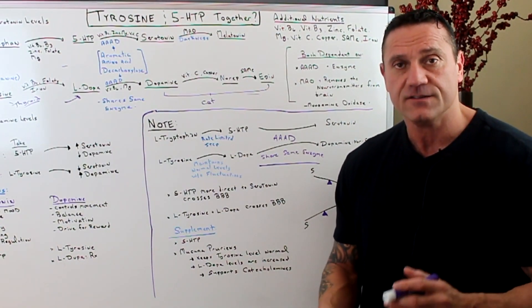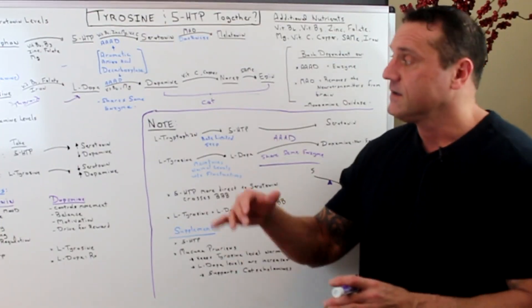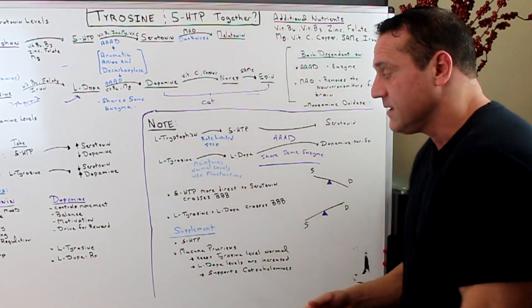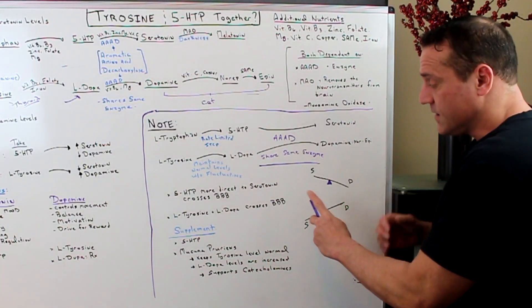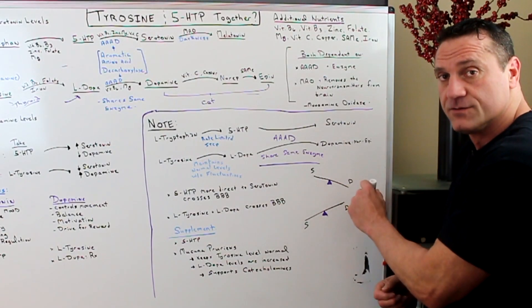That's the aromatic amino acid decarboxylase. Here's another safety mechanism. It shares the same enzyme called the AAAD, aromatic amino acid decarboxylase. And it acts as a teeter-totter. So if you take in too much 5-HTP, it's going to favor the serotonin and like a teeter-totter, you're going to have low dopamine.